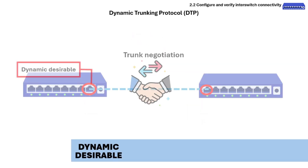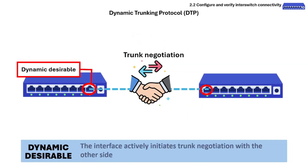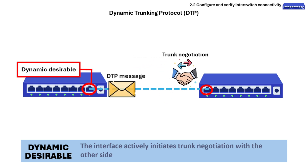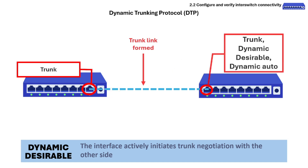In Dynamic Desirable mode, the interface actively initiates trunk negotiation with the other side. A switch interface configured as Dynamic Desirable will generate DTP messages and actively try to convert the other side to form a trunk. A trunk link will be formed if the other side is configured with Dynamic Desirable, Dynamic Auto, or Trunk mode.